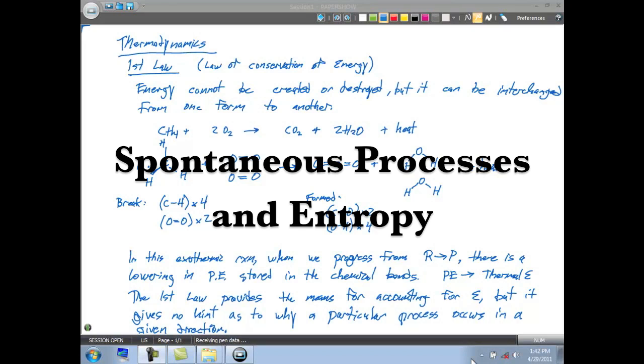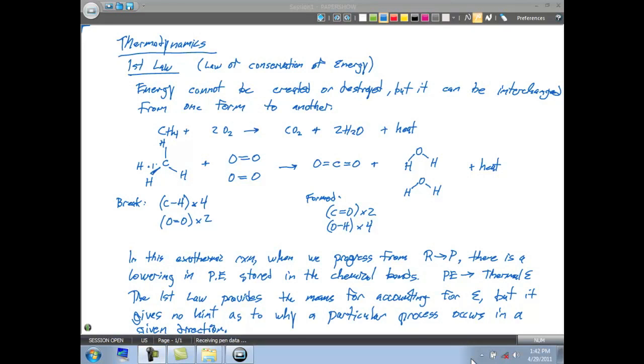Remember, chemists like to predict things. We like to predict if a particular reaction will proceed forward, or if it's not going to go forward. If it doesn't go forward, we want to be able to manipulate things, take that process and make it go forward and become more effective at getting a better yield.